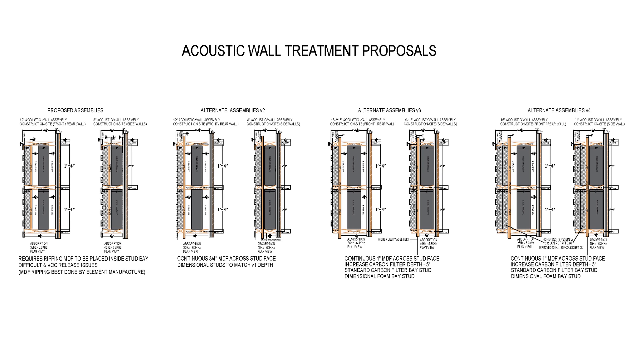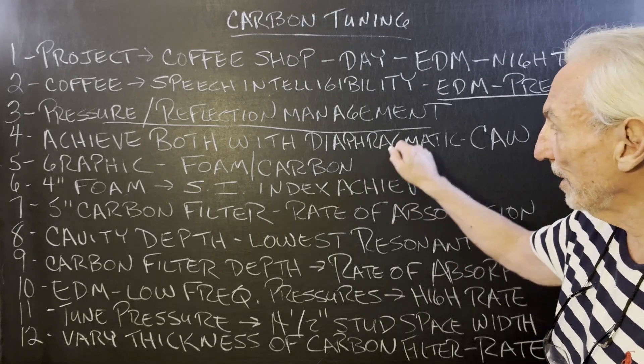I think it's 20 by 40 by 12, something like that. Ceiling height 12, 20 wide, 40 long. So that's what we calculated to achieve.